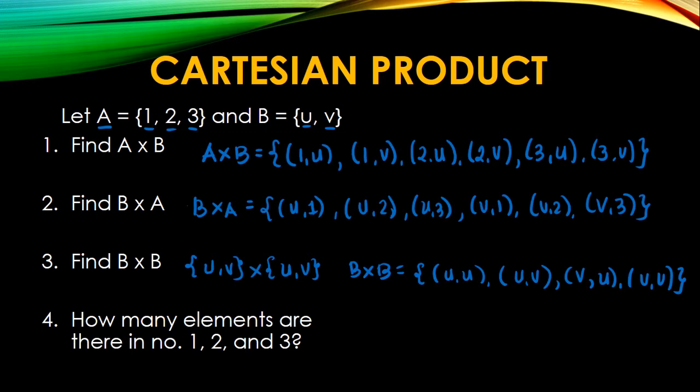So how many elements are there in number 1, 2, and 3? So all we have to do is to count the ordered pairs in the set. So these are called the elements. So we have A cross B. There are 1, 2, 3, 4, 5, 6, 6 elements. Likewise, with B cross A, 6 elements. And B cross B, 4 elements.